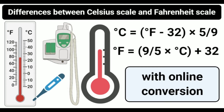Comparing the two scales: The Celsius scale, or centigrade scale, is a temperature scale based on the freezing point of water at 0°C and the boiling point of water at 100°C. The Fahrenheit scale is based on the freezing point of water at 32°F and the boiling point of water at 212°F. Celsius is abbreviated as °C, while Fahrenheit is abbreviated as °F. The Celsius scale is named after astronomer Anders Celsius, while the Fahrenheit scale is named after physicist Daniel Gabriel Fahrenheit.